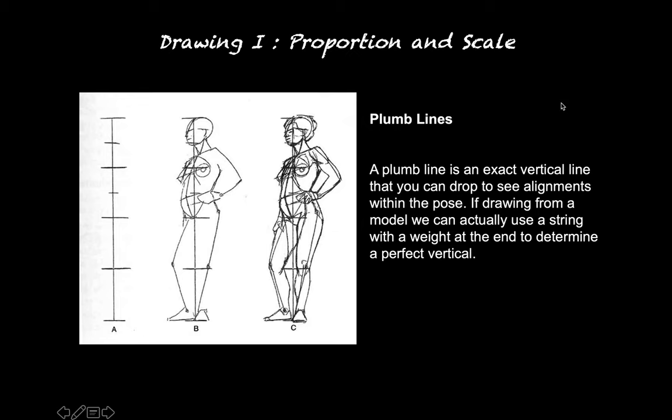Plumb lines: a plumb line is an exact vertical line that you can drop to see alignments within the pose. If drawing from a model, you can actually use a string with a weight at the end to determine the perfect vertical. Then you can compare how much of the figure is on one side of this vertical and how much on the other — where does the knee bend out or the elbow bend out?